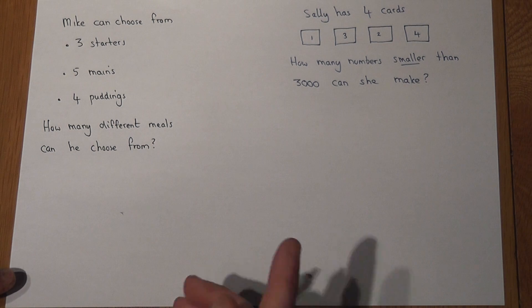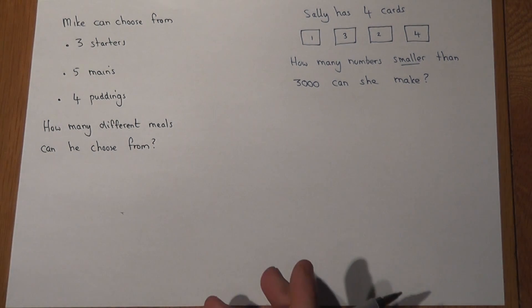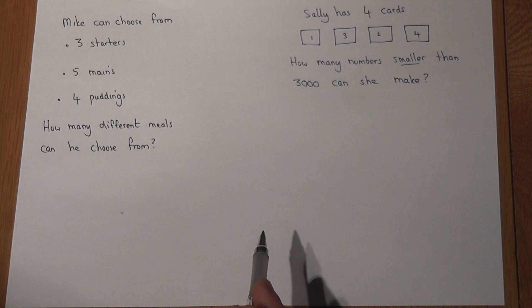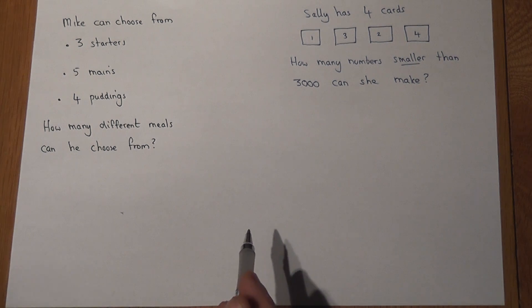Now in the first example, this person called Mike is choosing a meal and he can choose from a starter, a main, and a pudding. He'll choose one of each, and the question is how many different meals can you choose from.